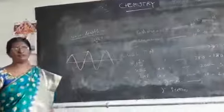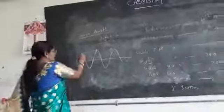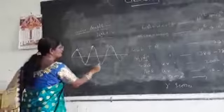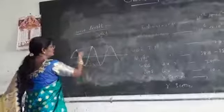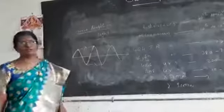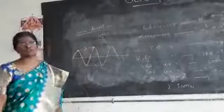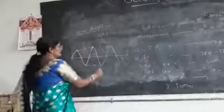Wavelength is the distance between any two successive crests or troughs. This is lambda, measured in angstroms, typically 1 to 10 to the power minus 8 meters.